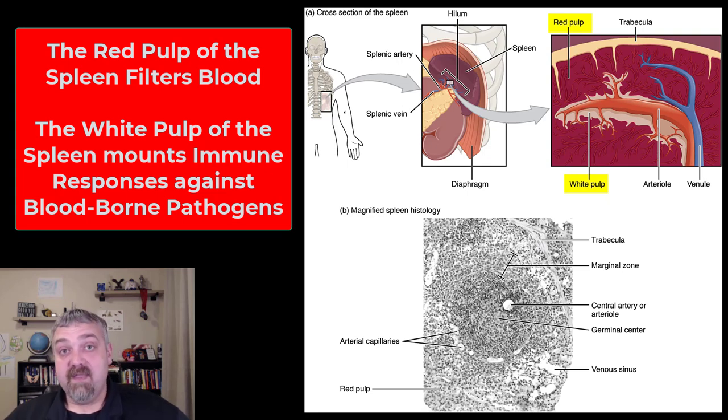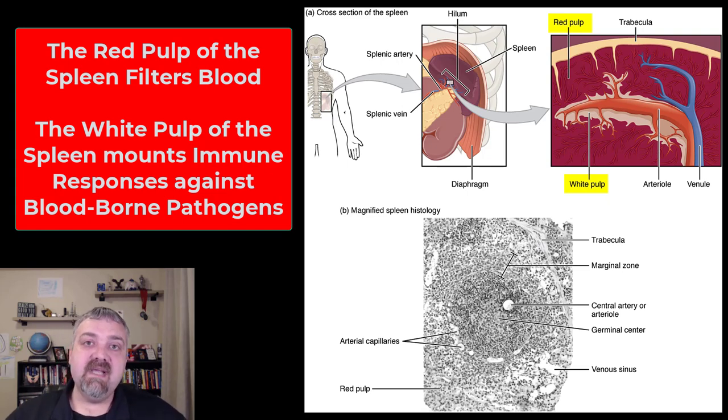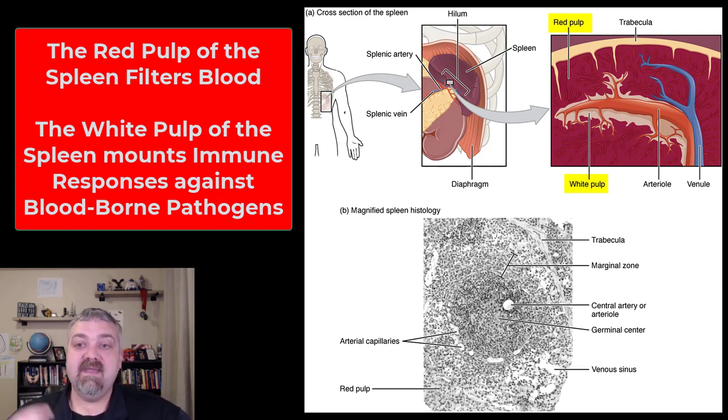The white pulp — think of it like a huge lymph node where it's going to be filtering, removing, and then mounting immune responses to whatever it finds from the blood.